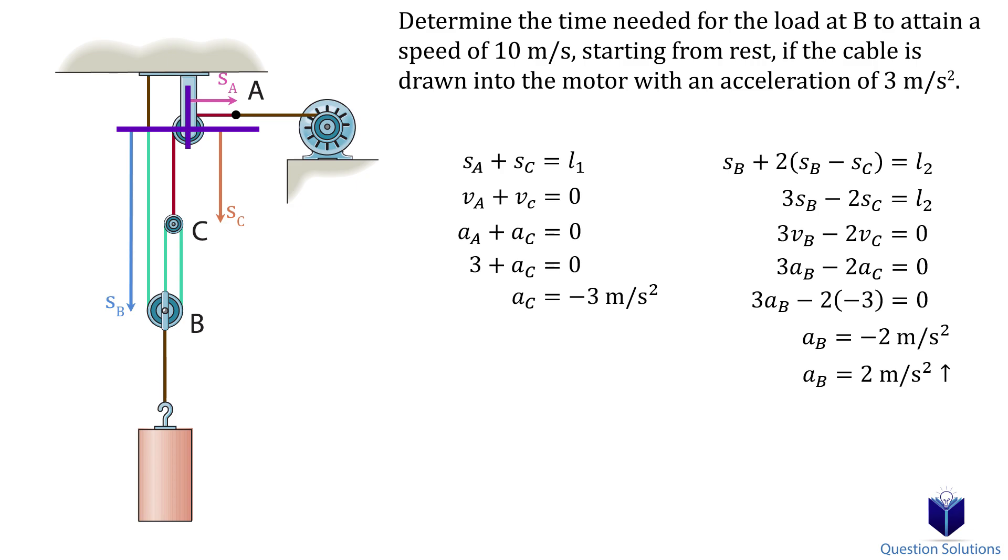To find the time it took for the load to attain 10 meters per second, we just need to use an old kinematics equation. Remember that the block has the same velocity and acceleration as pulley B since it's attached. So we can use this equation to find the velocity. The initial velocity is 0 meters per second, final velocity is 10 meters per second and acceleration is 2 meters per second squared. Solving gives us 5 seconds.